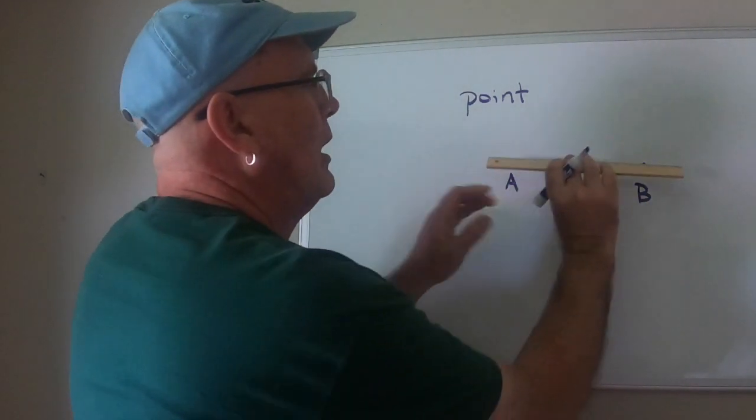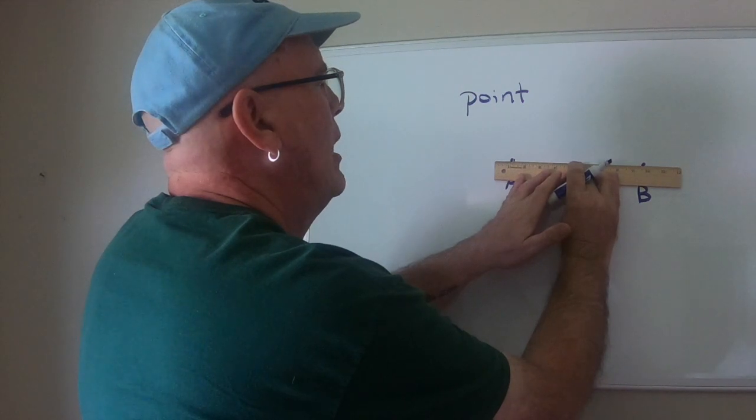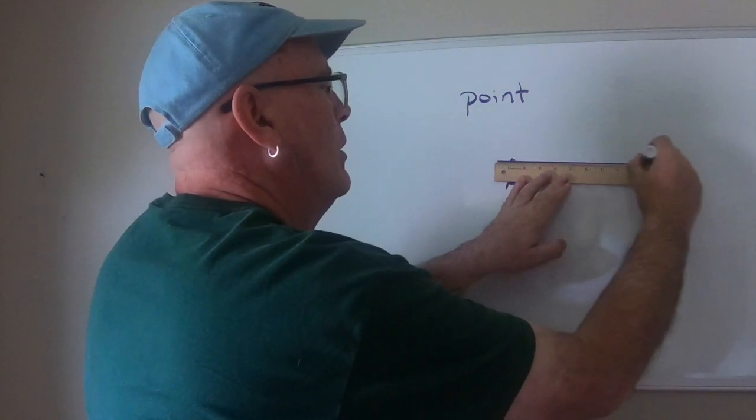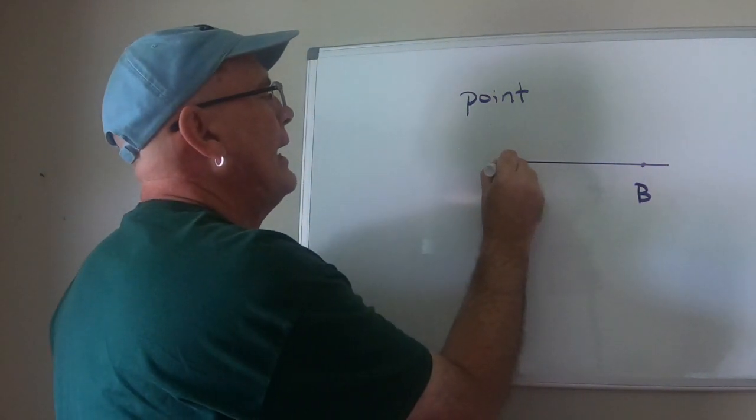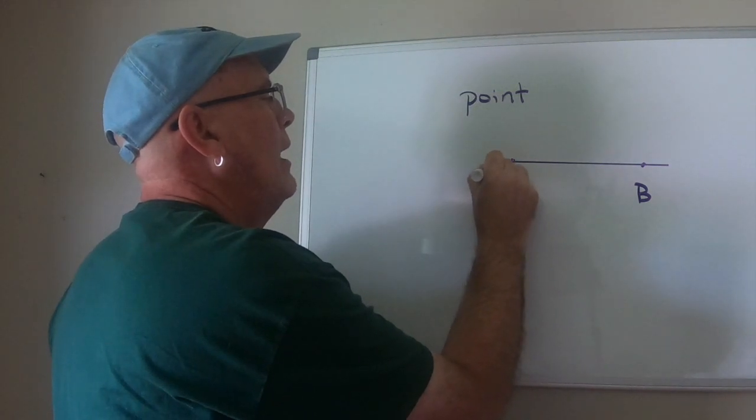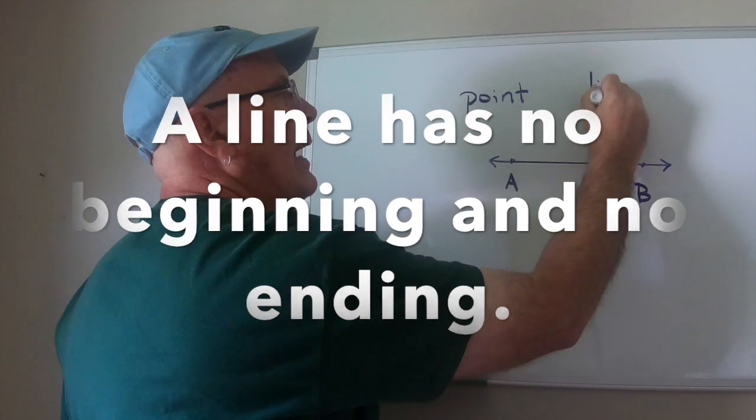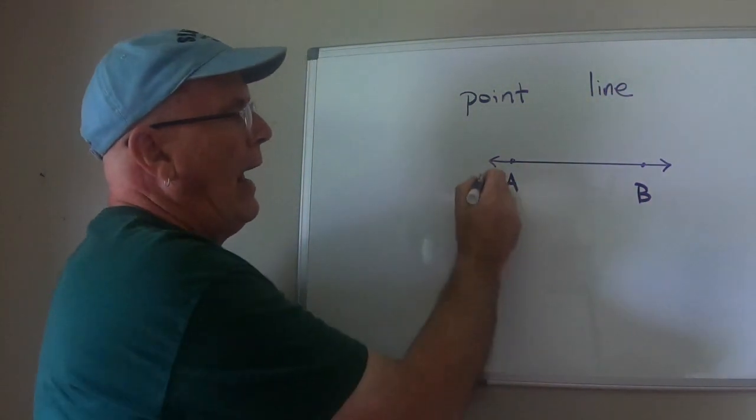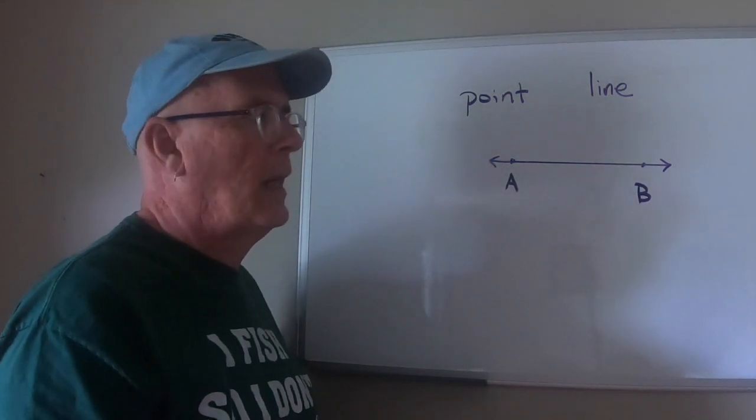And it's an old adage that the shortest distance between two points is a straight line. So a line is just a direction. And the definition of a line is that it has no beginning and no ending. So a line has no beginning and no ending and these arrows at either point indicate that it's a line.